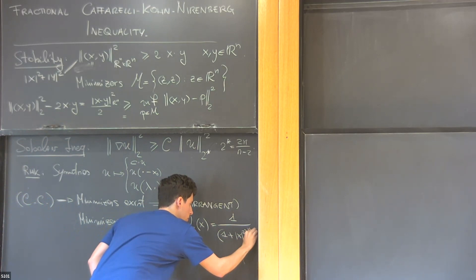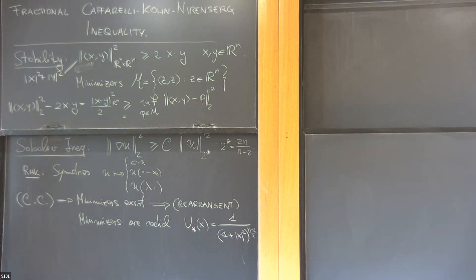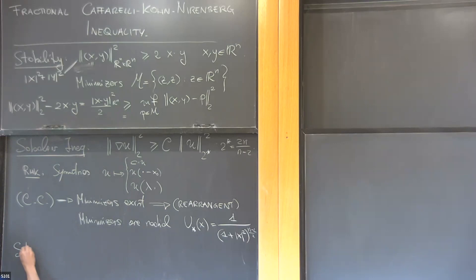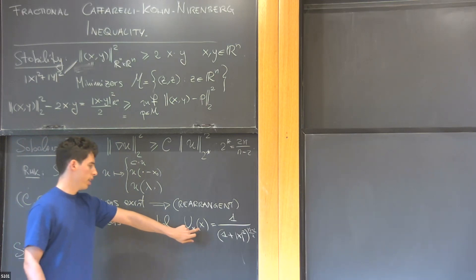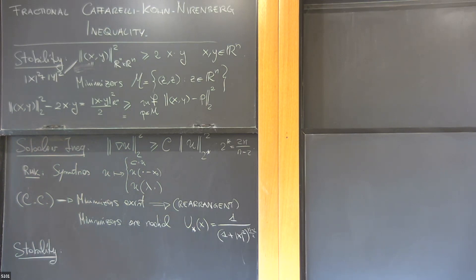Once radial, one can show minimizers have an explicit formula — I'll write down one of them, something like (1+|x|²)^{−(n−2)/2}, up to constants. Not only do radial minimizers exist — all minimizers are exactly this one up to the symmetries. Stability says much more than this, but as a corollary one recovers exactly that.